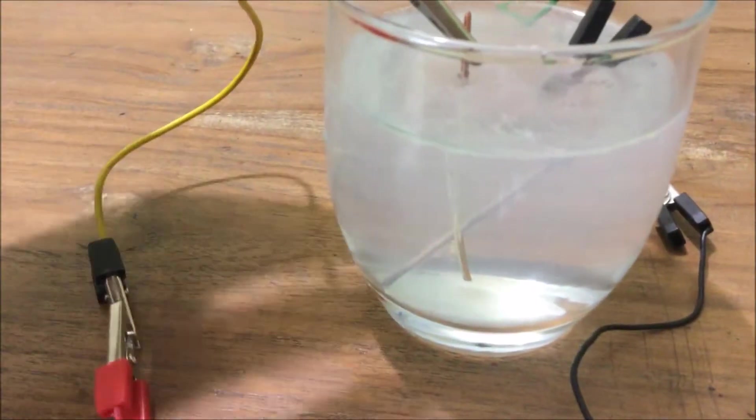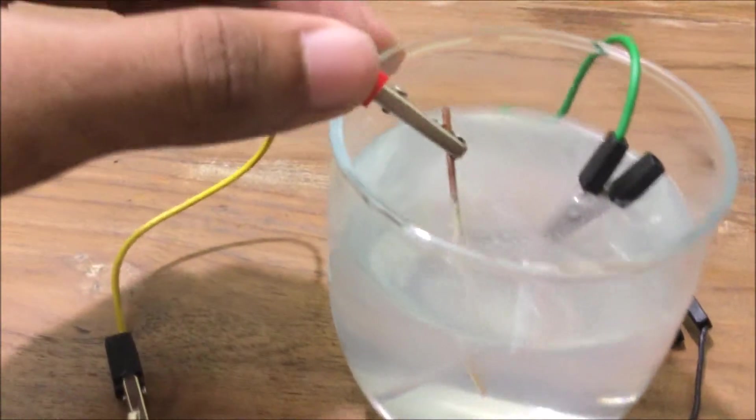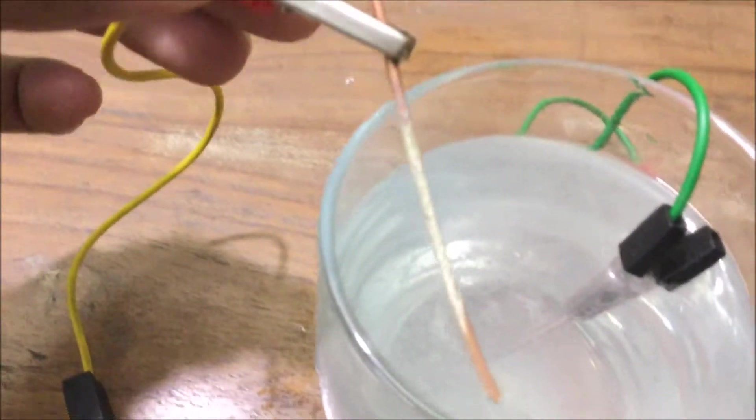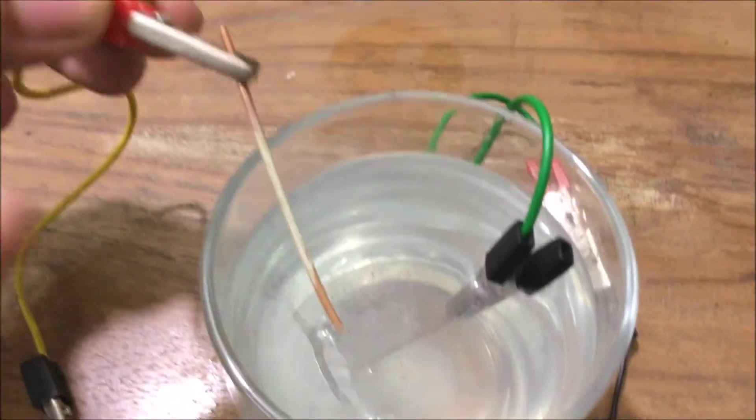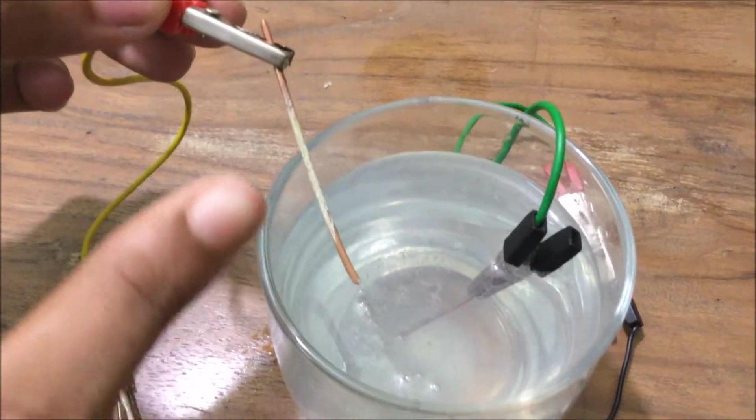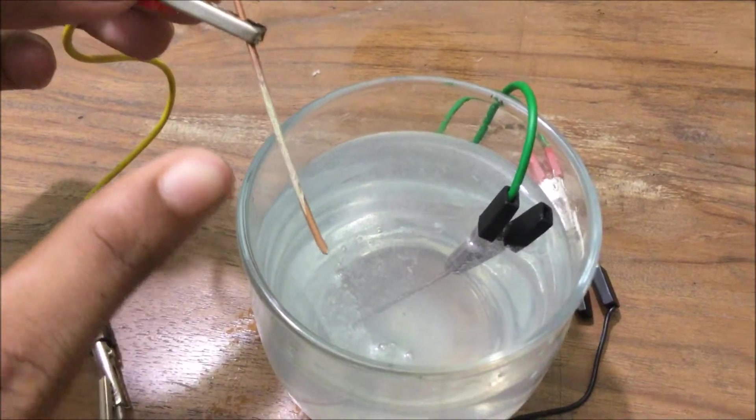You can see that this is the sodium metal. The rod is containing sodium metal, that's why it is a little bit whitish. This is sodium metal. You can extract it.